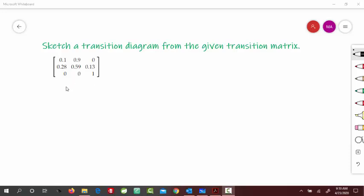From here you can see that this is a 3 by 3 matrix, meaning 3 rows and 3 columns. So it means that this would have 3 states.